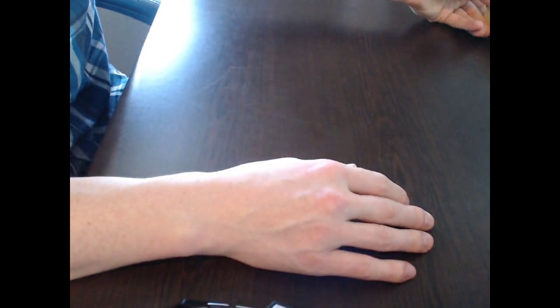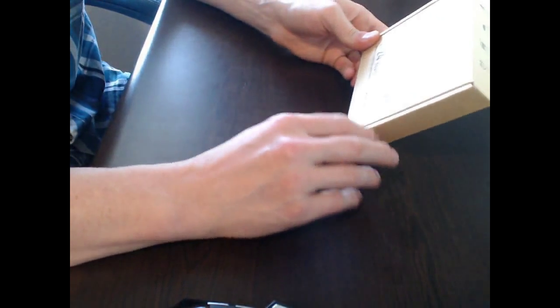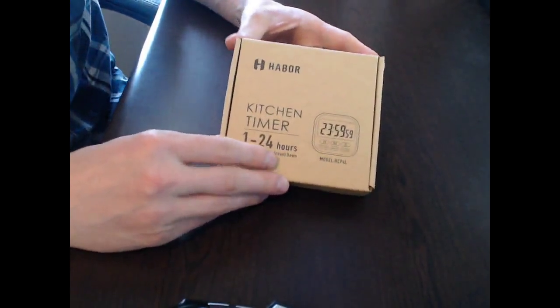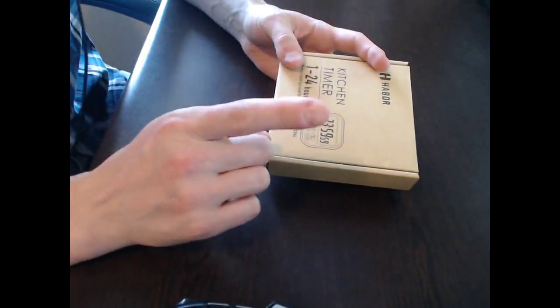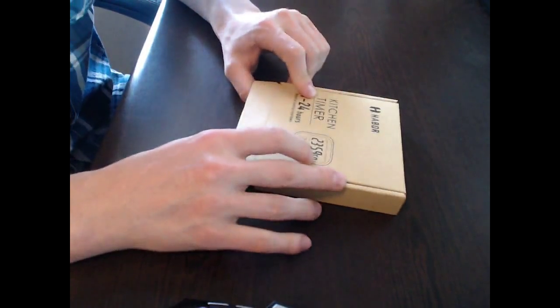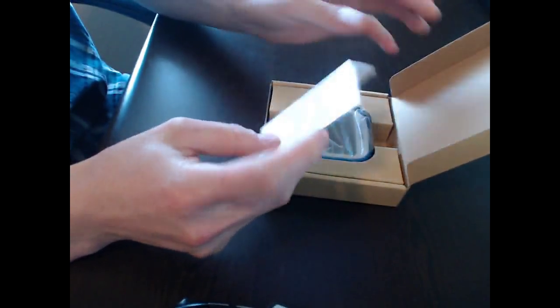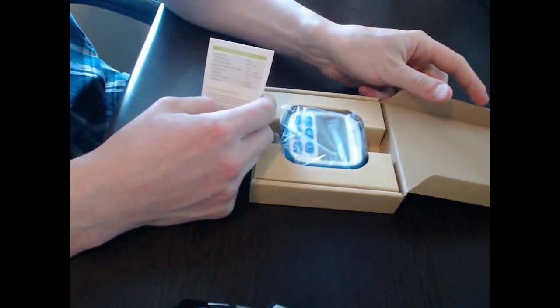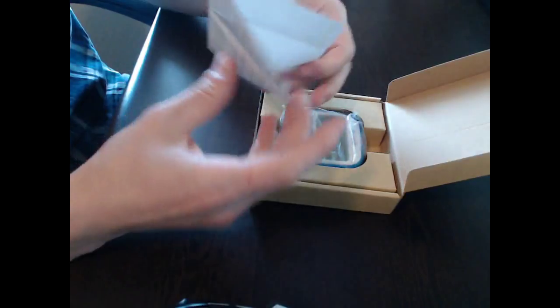They're named Habor, H-A-B-O-R. Habor has sent me a kitchen timer to test out. And I know it doesn't sound like much, but a test is a test. Looking inside this box, there's nothing on it, it's a very simple box. It just says kitchen timer on the front and you've got a picture of the kitchen timer. Looks pretty slick.